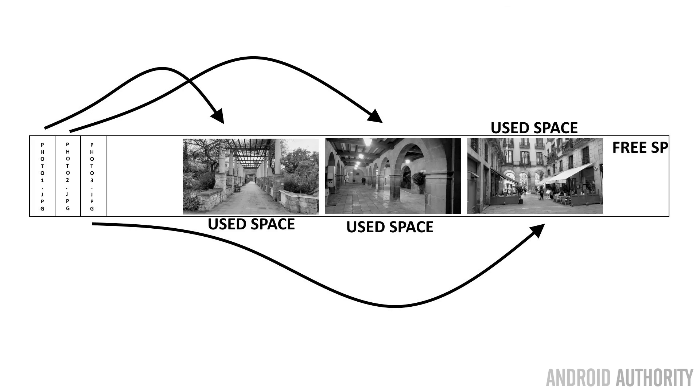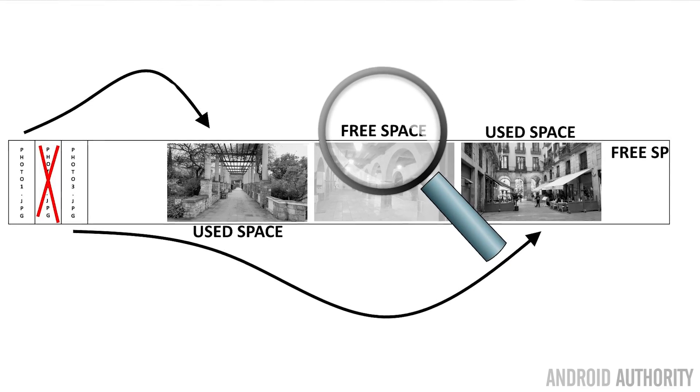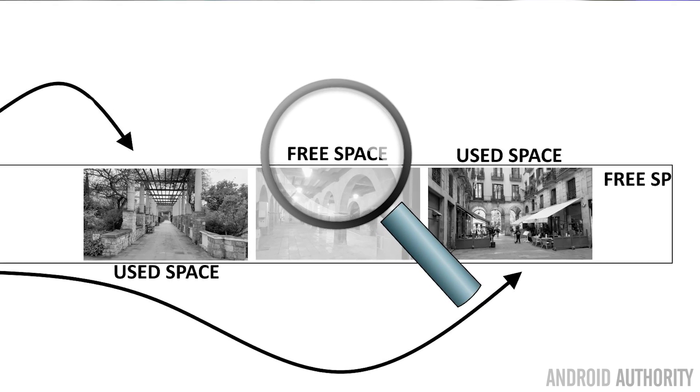Now when a file is deleted on each of these four different file systems, what actually happens is different because they're organized and structured differently. But in general, broad strokes, what happens is that the space that was being occupied by the file is just marked as free space. The data isn't obliterated — it's not actually removed. All that happens is that where the file was before, it now says this is free space. This means that if you want to recover a deleted file, you need tools that understand EXT4, F2FS, EXFAT, and FAT32, and know to search through the free space to find files that were previously in existence but have now been marked as deleted.